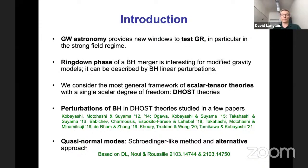I'm going to concentrate on scalar-tensor theories, working in the context of the most general framework of scalar-tensor theories which carry only one scalar degree of freedom — the DHOST theories. I'll remind you quickly what those theories are, though Tsutomu did an excellent job yesterday presenting them. There are a number of papers which have studied the perturbation of black holes in DHOST theories in the last few years. The goal of the work I'm going to present is to extract the quasi-normal modes.